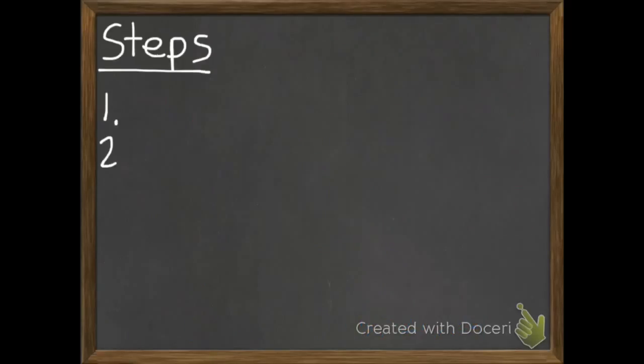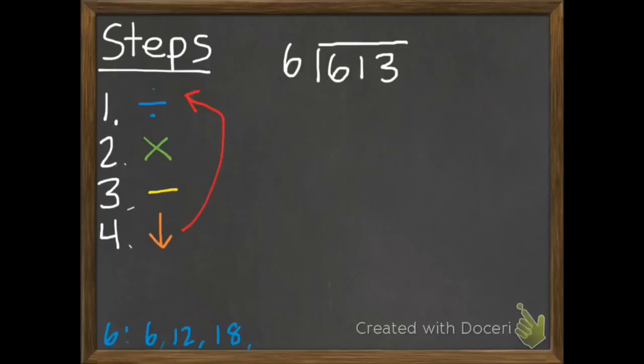This next example I want you to do along with me and copy it down in your notebook step by step. So once again we have our 4 steps. And we have a new problem. 613 divided by 6. I'm going to write my multiples again. So there we go. 6, 12, 18, 24, 30, 36.